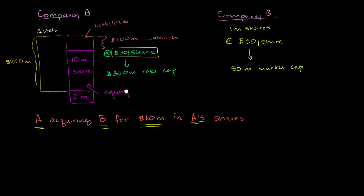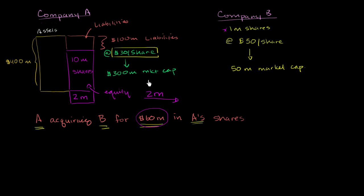They're going to directly give — assuming Company B shareholders agree to this — they're going to give the shares directly to Company B's shareholders in exchange for essentially getting control of Company B's shares. So they're going to take these 2 million shares, which right now on the market look to be worth $60 million, and give them to all of Company B's shareholders in exchange for all of Company B's existing shares. Company A is going to give 2 million shares of Company A to the shareholders of Company B.